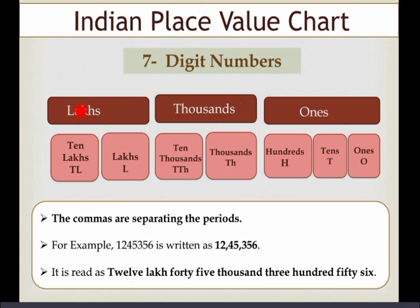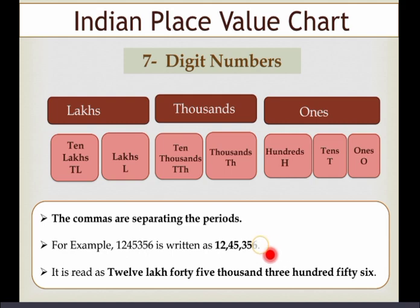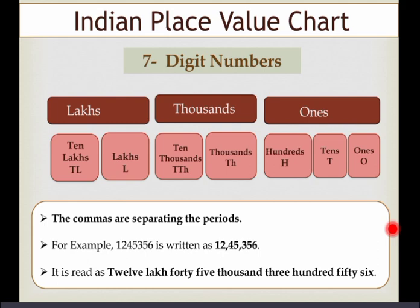Here I have given one example of a seven-digit number written using commas. First, write the last three digits, then insert a comma, then two digits, then insert a comma, then the remaining two digits. This gives you the seven-digit number.